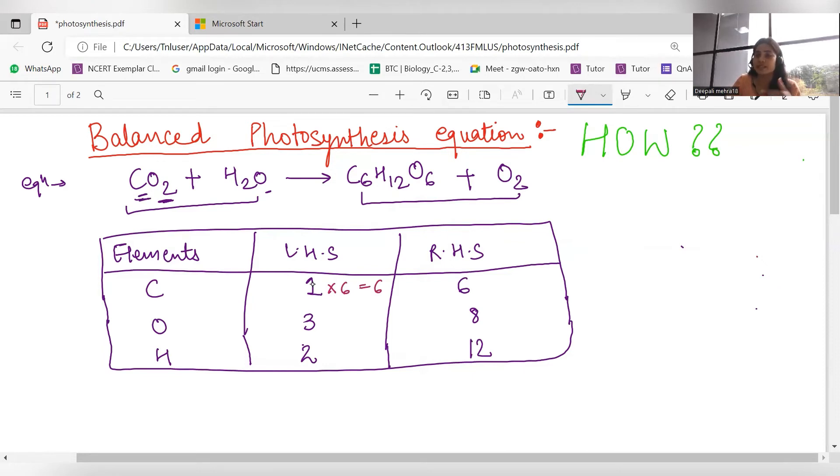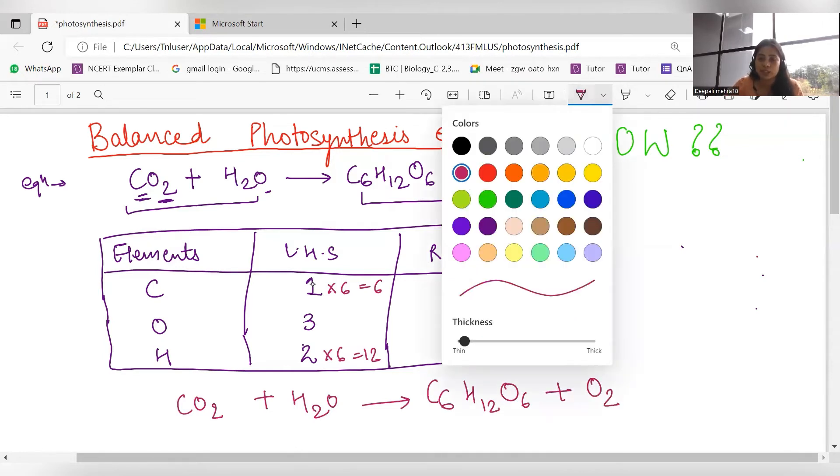Here we have hydrogen 12, means we multiply 6, and we will balance the equation. So C6H12O6 plus O2. We will use another color, we will use this one.